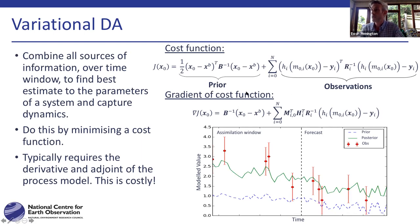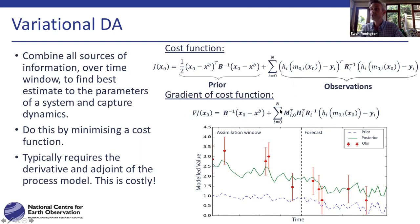To minimize this cost function, we need the derivative of the cost function because we tend to use a gradient-based descent algorithm. The gradient of the cost function is given by this equation, and we have an issue: this particular term here is a bit of a pain to compute. This is the adjoint, or the tangent linear model.